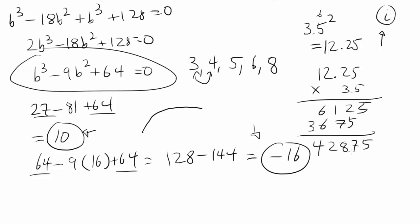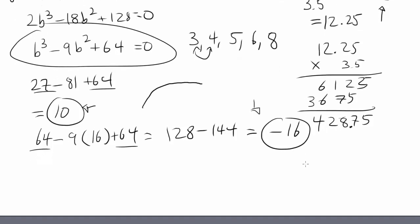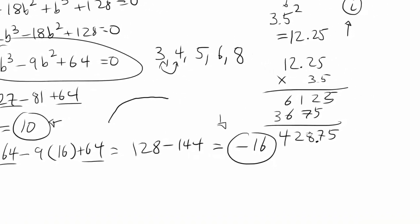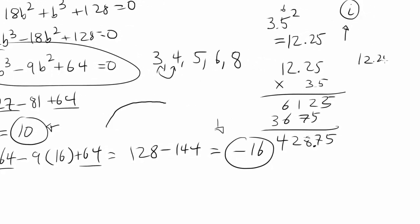That gets you 42.875. And you have 12.25 times 9. So 12.25 times 9, that's 110.25. Oh wait, this thing should be 42.875. My bad. You want to move the decimal place three times. And you have 110.25.